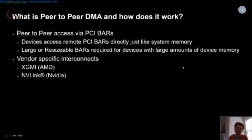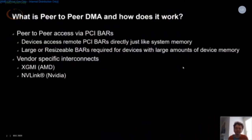Platforms generally have a system physical address space, and within that they have apertures defined for IO space. On 32-bit platforms you have to divide that 32-bit physical address space between IO and memory access, so you have a pretty limited window. On modern devices with a lot of memory or large doorbell apertures, it takes a lot of space. On newer 64-bit platforms we have a lot more room.